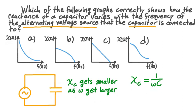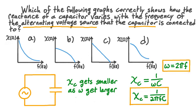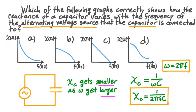To use this formula, we'll need to convert between omega, the angular frequency, and f, the regular frequency, using omega equals 2 pi f. With frequency in the denominator, we can clearly see that the capacitive reactance will get smaller as the regular frequency gets larger, and vice versa. All of the graphs pictured show a larger reactance at lower frequencies and a smaller reactance at higher frequencies, so we need some other way to distinguish between these graphs.